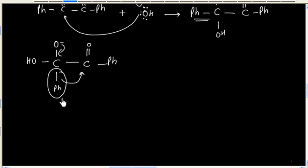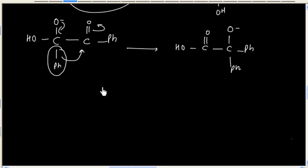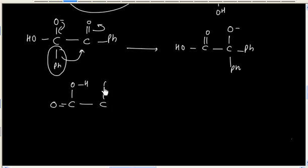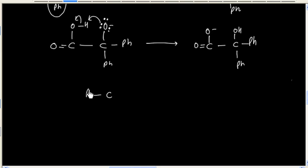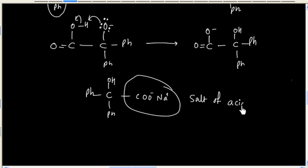So we can shift the phenyl group with its bond pair. Finally, we will have an intramolecular acid-base reaction where the lone pair can take a proton. So we will finally have this product: a salt of acid plus an alcohol — the compound contains a salt of acid and an alcohol.